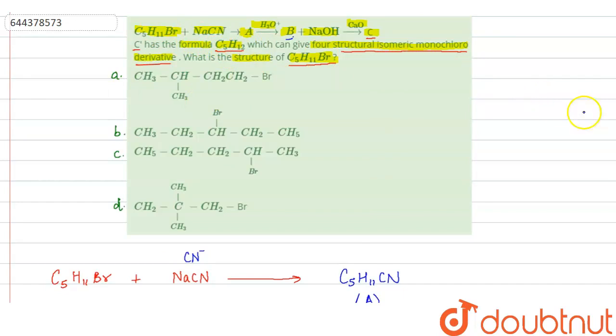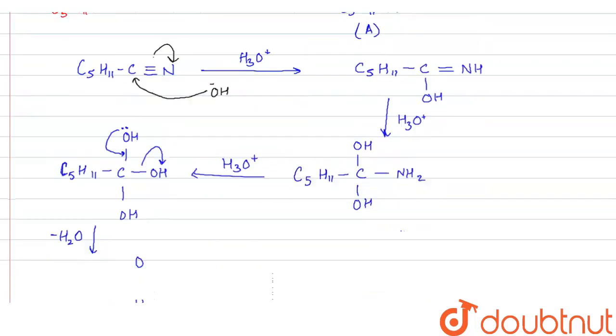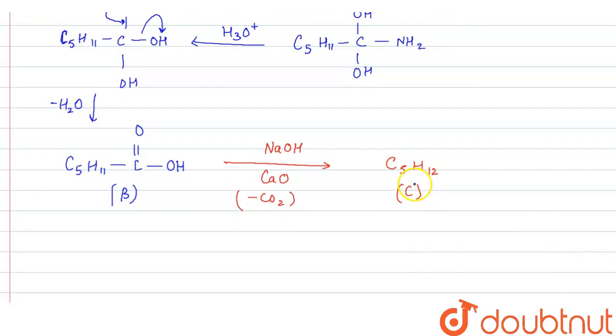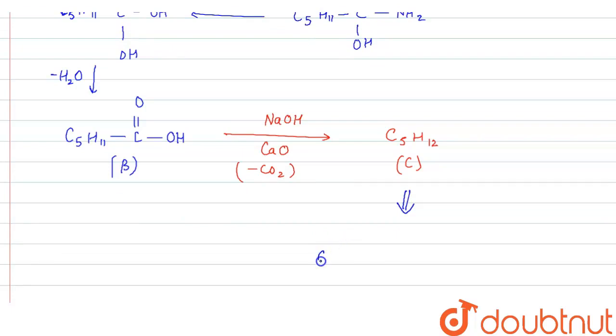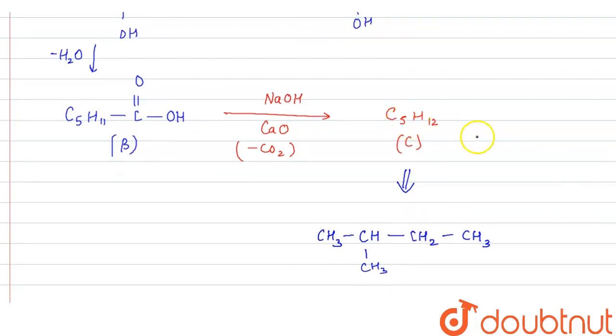Now, C5H12 can give 4 different structural monochloro derivative. And it is only possible when there will be 4 different carbon atoms. And we have only 1 compound with formula CH3, CH, CH3, CH2, CH3. So, this is the only compound with molecular formula C5H12 which can give 4 monochloro derivative. Because if we count the carbon atoms here, this carbon and this carbon is same. So, when there will be substitution on these carbons, we get 1 product. Then this is different. Then this is different and this is different. The 4 different products are obtained here. So, this will be the answer.